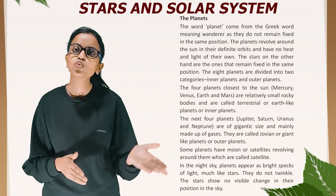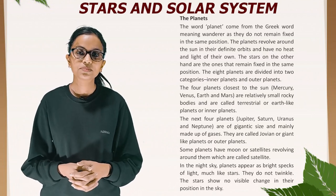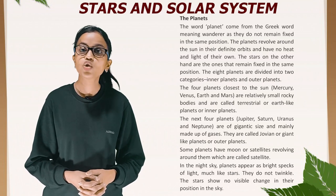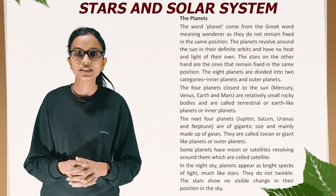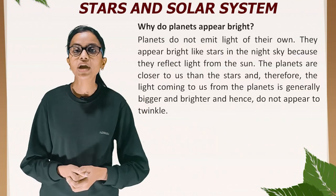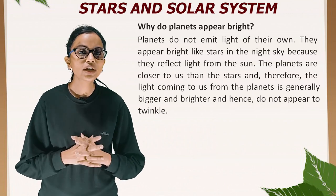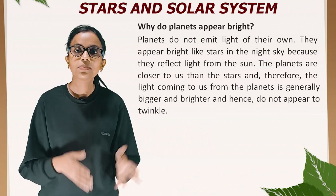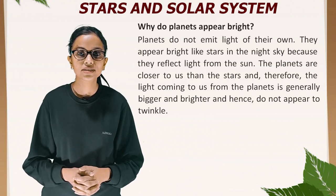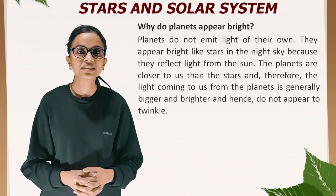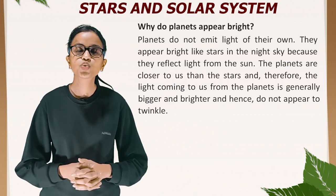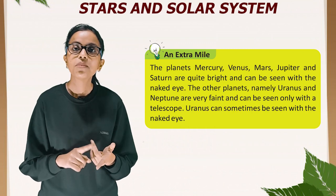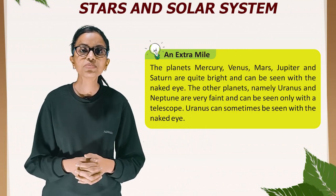Some planets have moons or satellites revolving around them. In the night sky, planets appear as bright specks of light much like stars, but they do not twinkle. Planets do not emit light of their own; they appear bright in the night sky because they reflect light from the Sun. The planets are closer to us than the stars, and therefore the light coming from the planets is brighter and does not appear to twinkle. The planets Mercury, Venus, Mars, Jupiter, and Saturn are quite bright and can be seen with the naked eye.